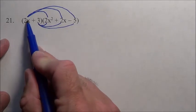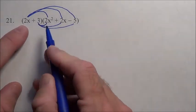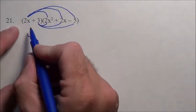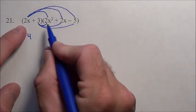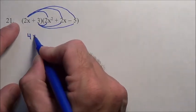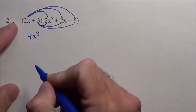So let's do that. I have 2x times the 2x squared, well 2 times 2 is 4, x times x squared, well that's x, that's xx, so that's x to the third power because we are multiplying.